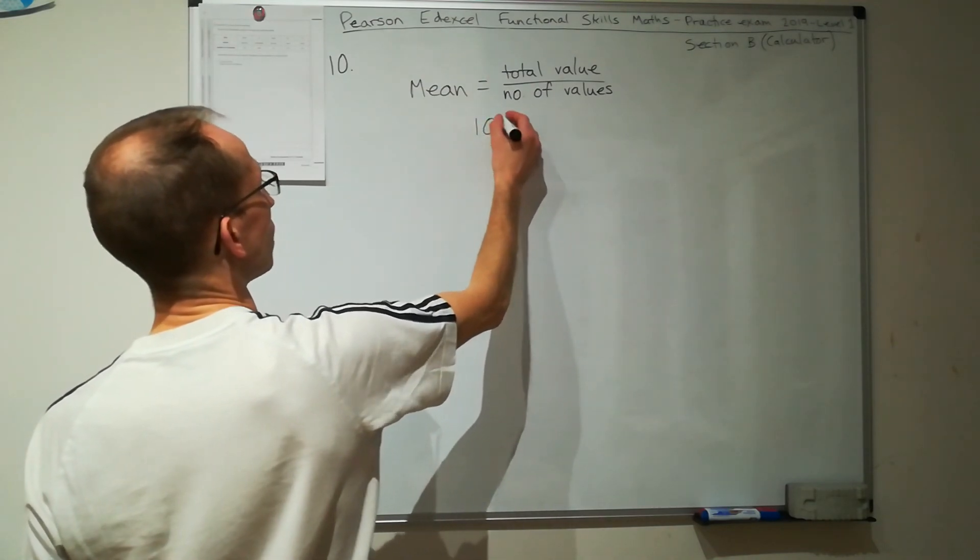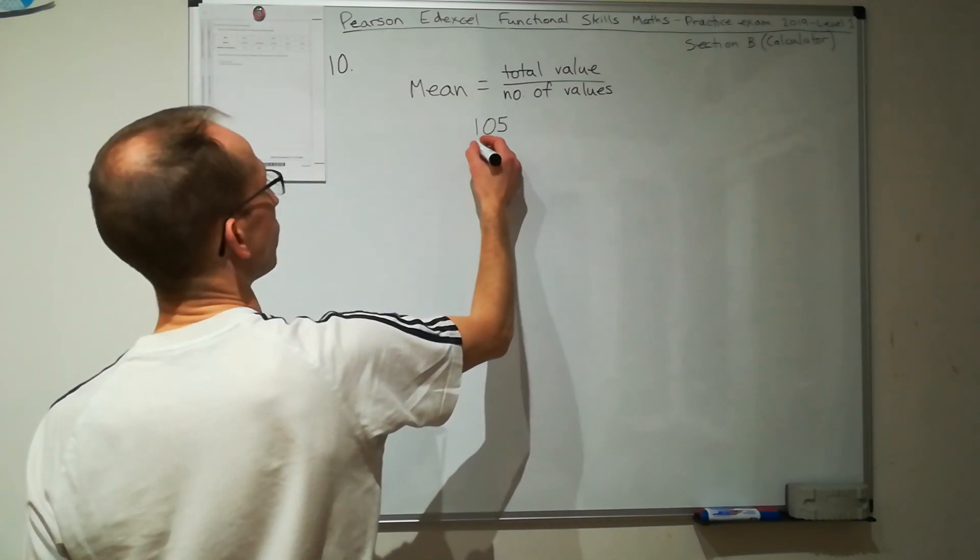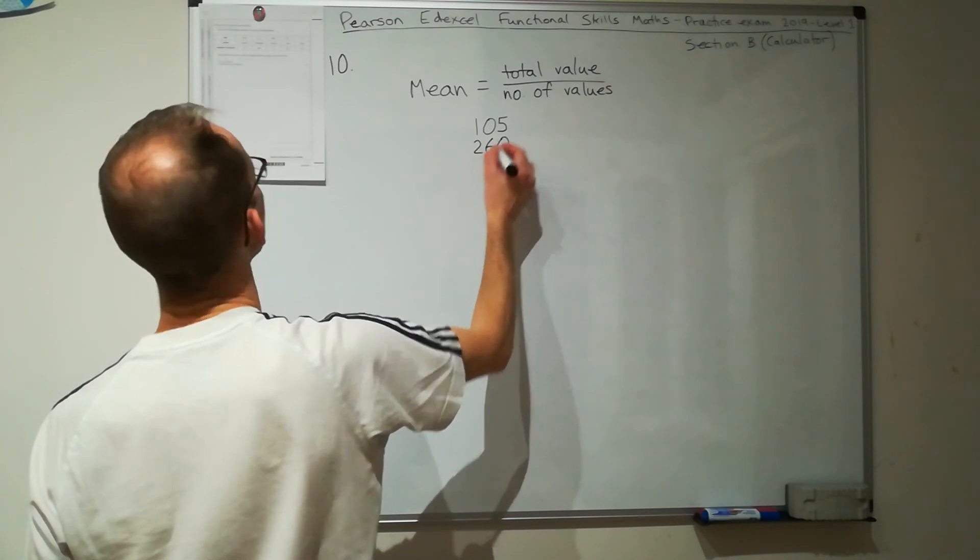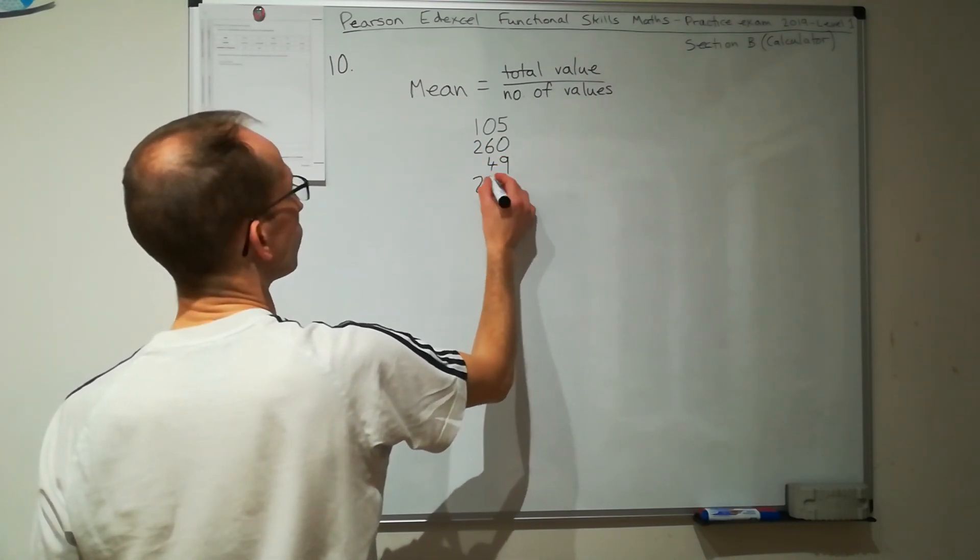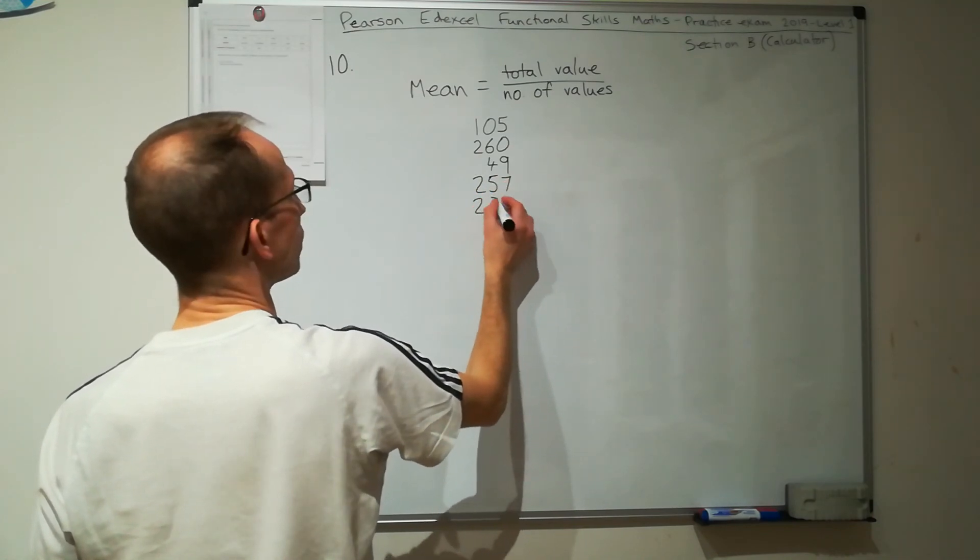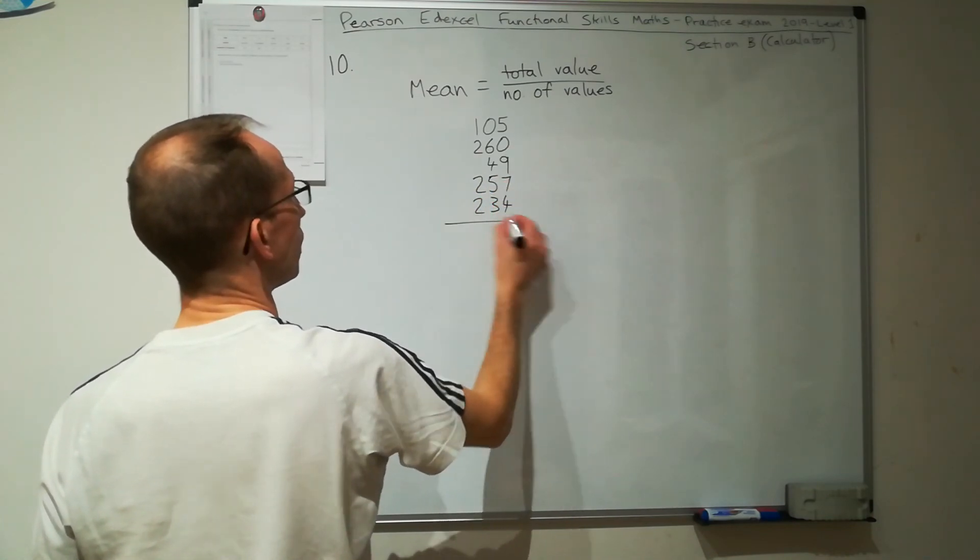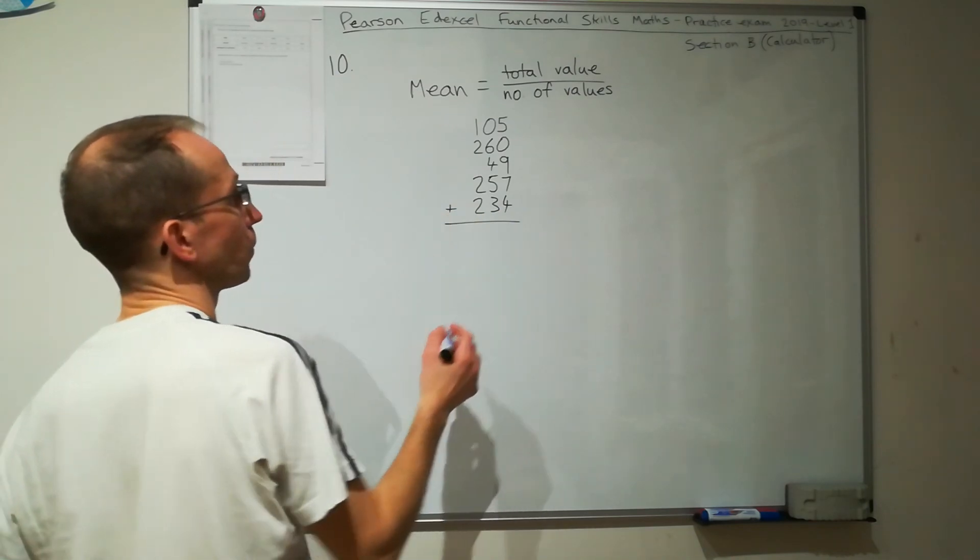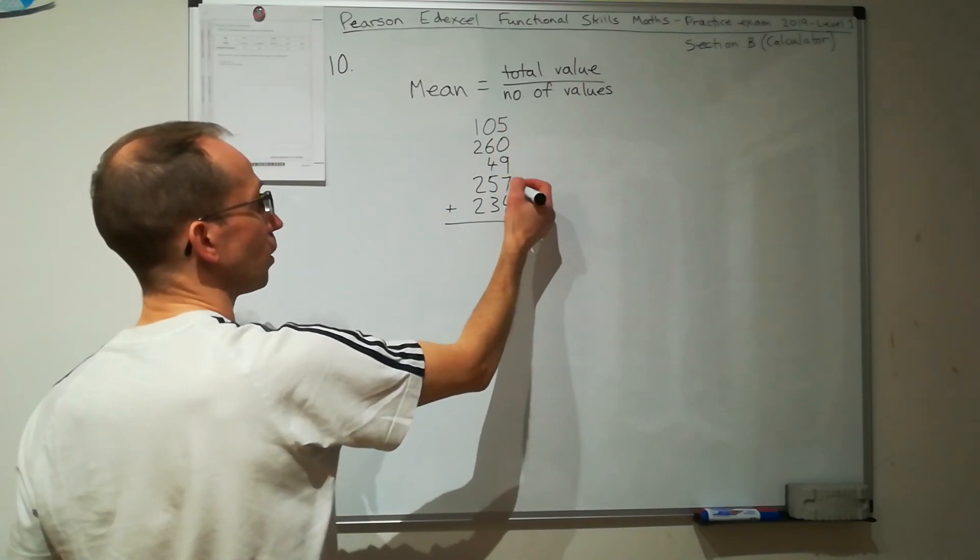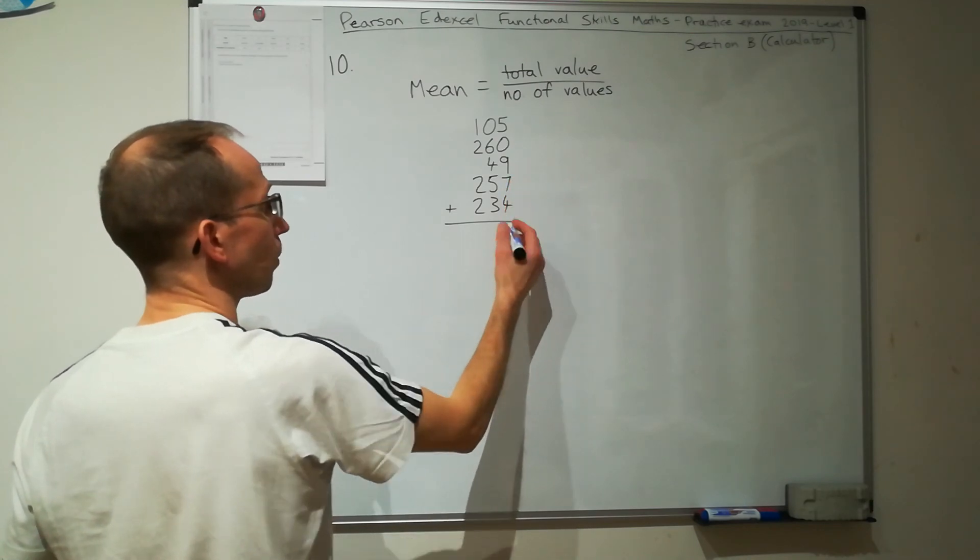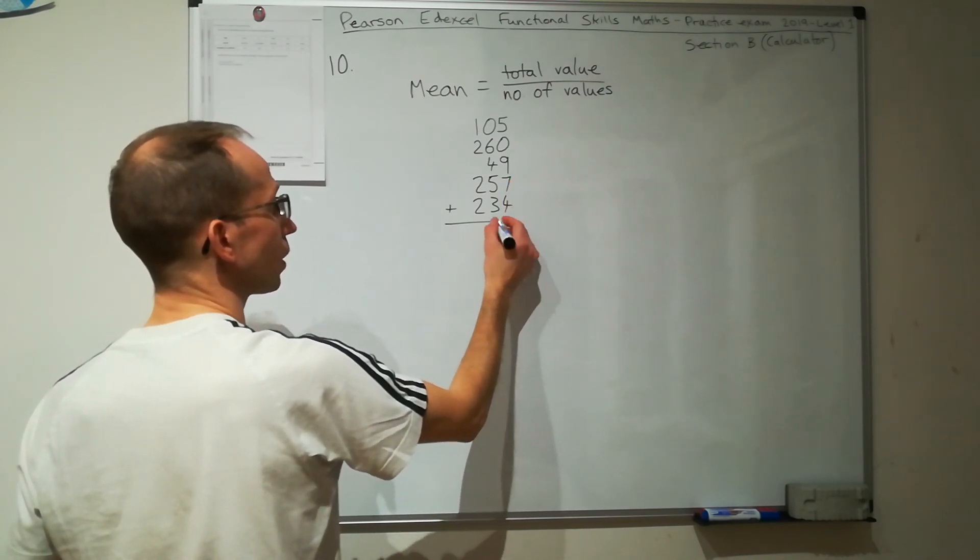We have got 105, 260, 49, 257, 234. And I'm going to add these all together. 5 plus 0 plus 9 is 14, plus 7 is 21, plus 4 is 25, carry the 2.